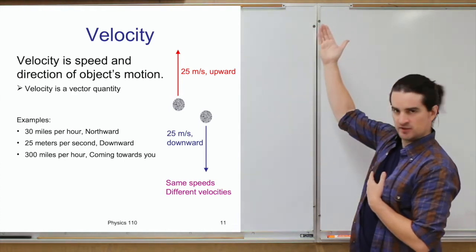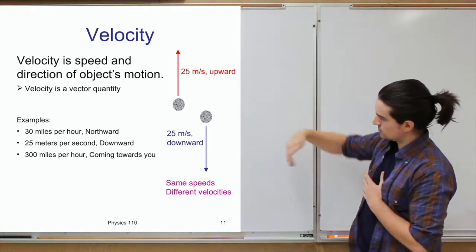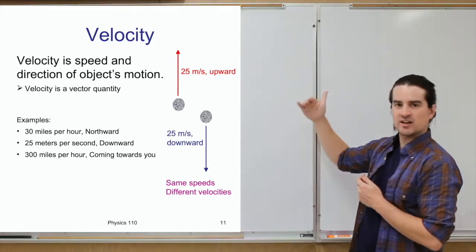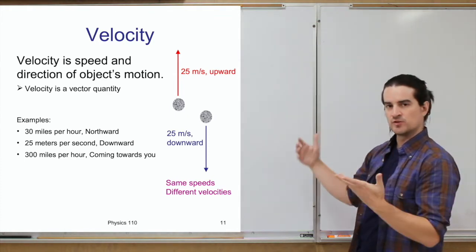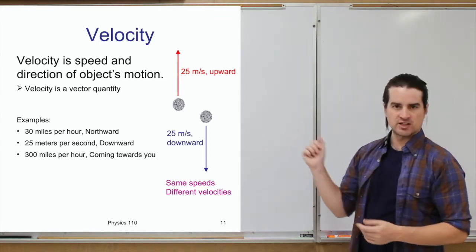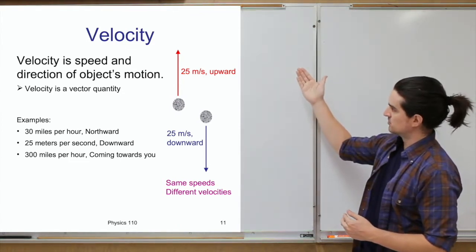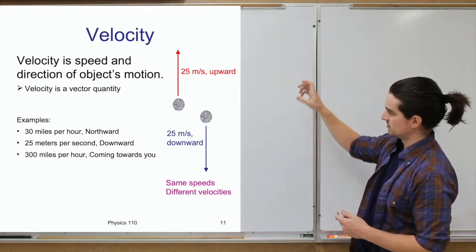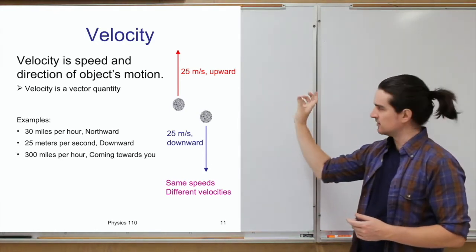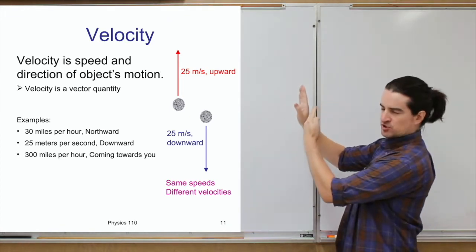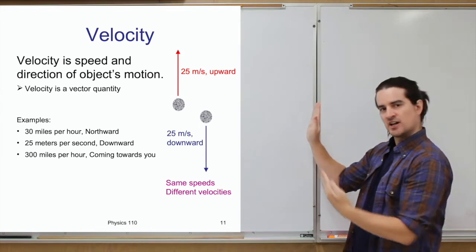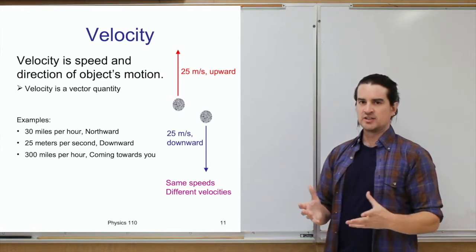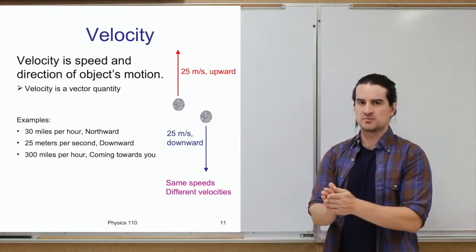So these two rocks both moving at 25 meters per second have the same speed, but different velocities because their directions are different. Even tilting the angle just a little bit gives a different velocity. For an object's velocity to remain unchanged, its speed needs to be constant and the direction it's moving needs to be constant.